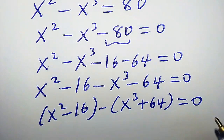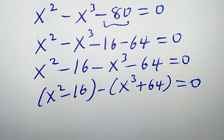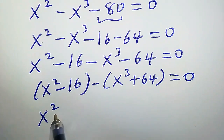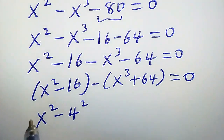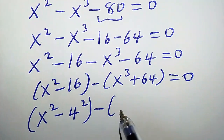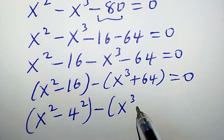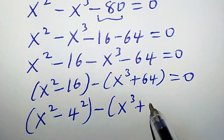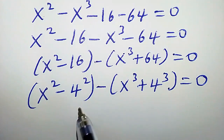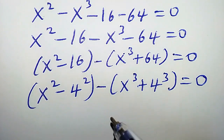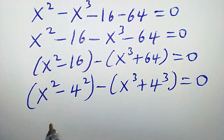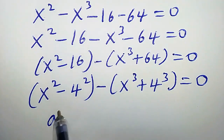Nothing has changed. Let's proceed further. We can write these as x squared minus 4 squared, because 4 times 4 is 16, minus x cubed plus 64, which is the same thing as 4 cubed, equals zero. At this stage it is good to recall the difference of two squares formula and the cubic formula.